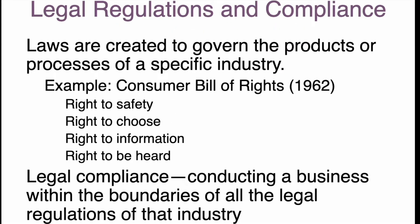Those are things we can decide at our level. There are also things companies do on their own, and things government does — legal regulations and compliance. The government knows that unless rules are in place, people may not behave as they should. Laws are created to govern the products or processes of a specific industry. One example is the Consumer Bill of Rights from 1962, which established the right to safety, right to choose, right to information, and right to be heard.